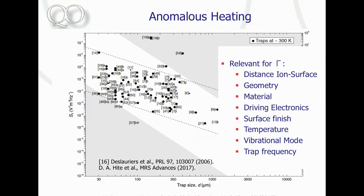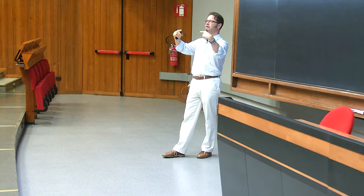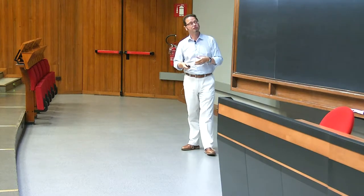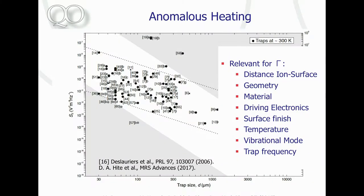With the exception of two experiments. Experiment 16 shows a distance dependence measured in a single trap — a so-called needle trap with just two needles as electrodes where the needle separation was varied. However, geometrical factors complicate interpreting these results. A more recent experiment also systematically investigated distance scaling, but again geometrical factors played a very dominant role.